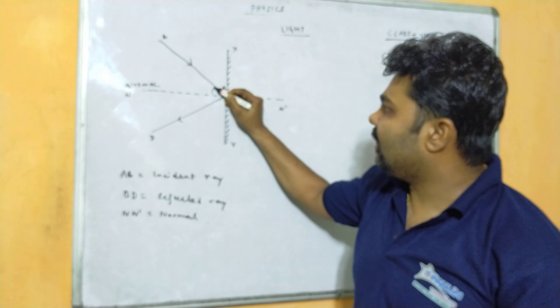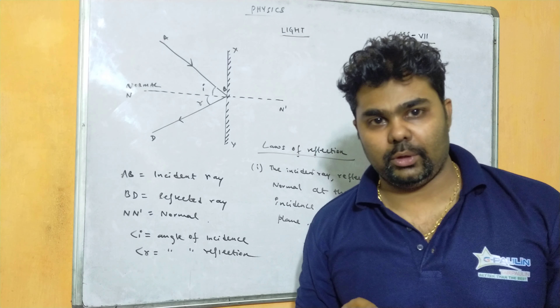These are the terms we have already learnt in my previous classes. If I ask what are the laws of reflection — there are basically two laws of reflection. The first law is that the incident ray, the reflected ray, and the normal at the point of incidence all lie in the same plane.